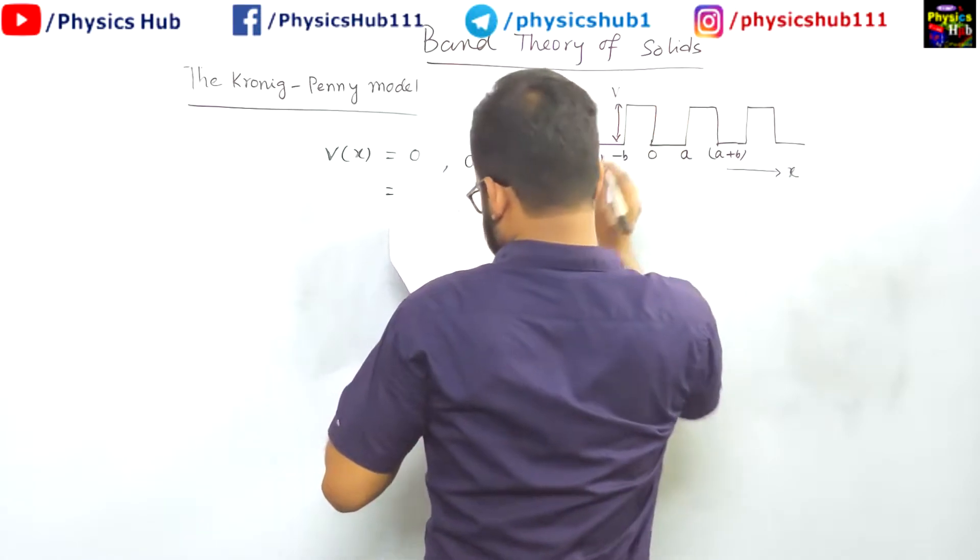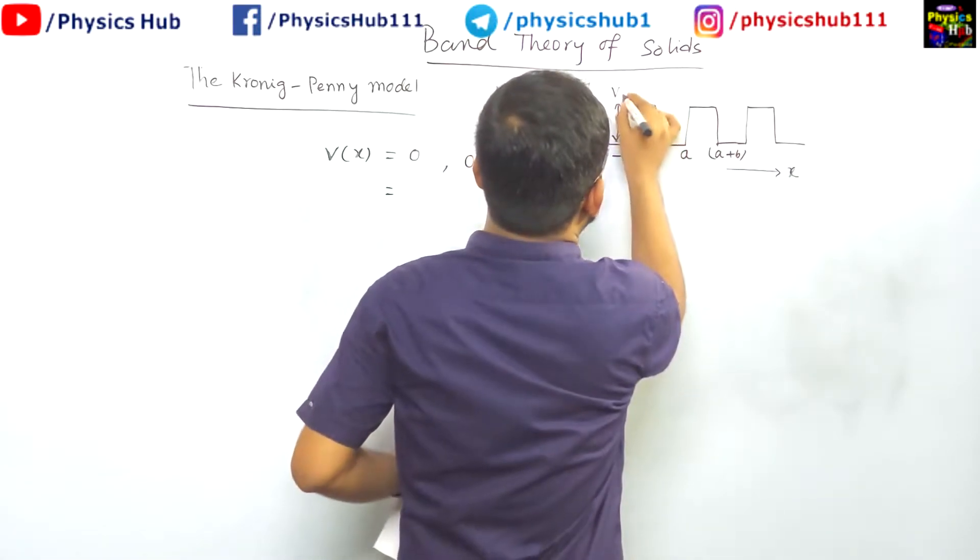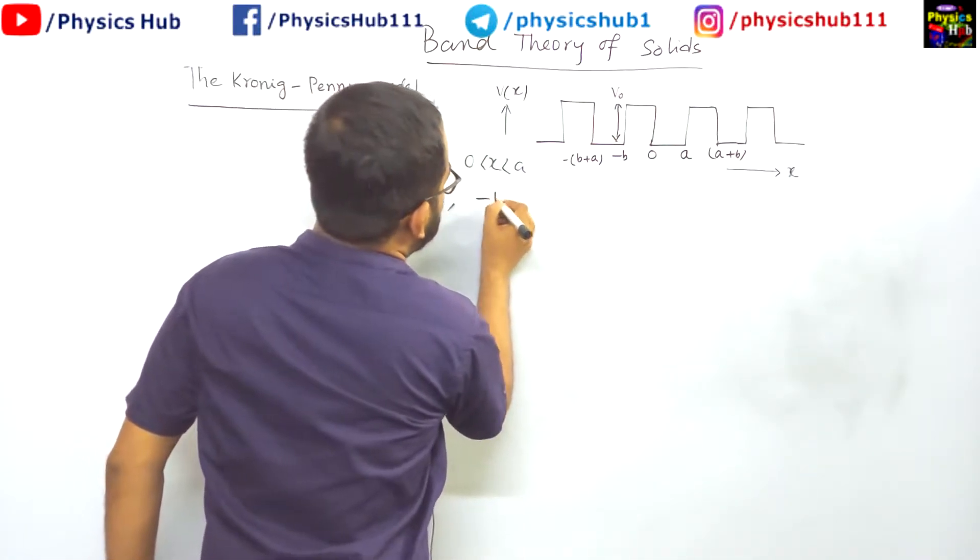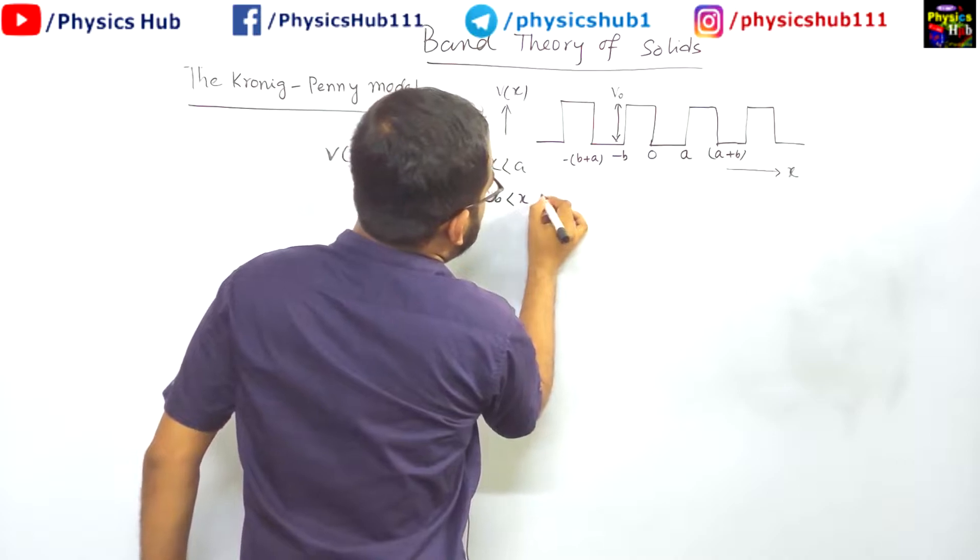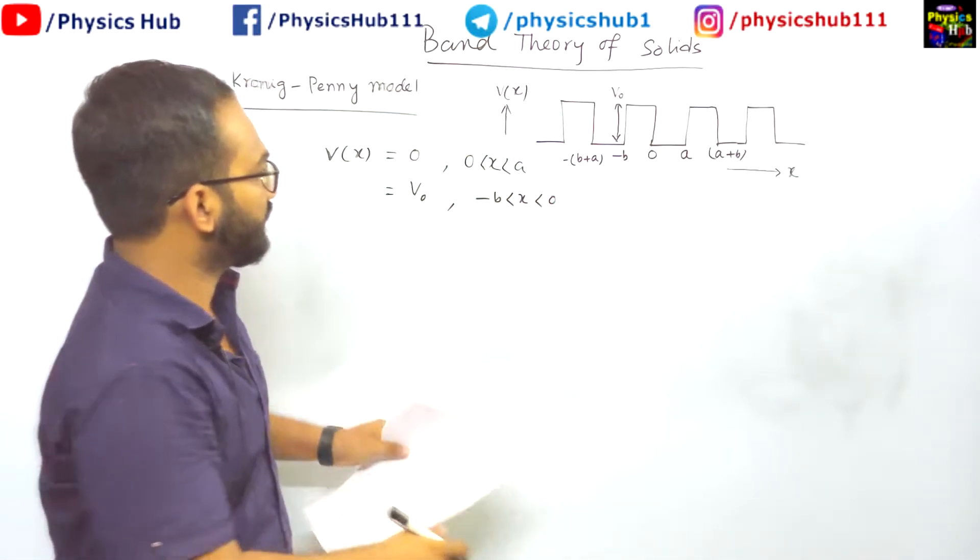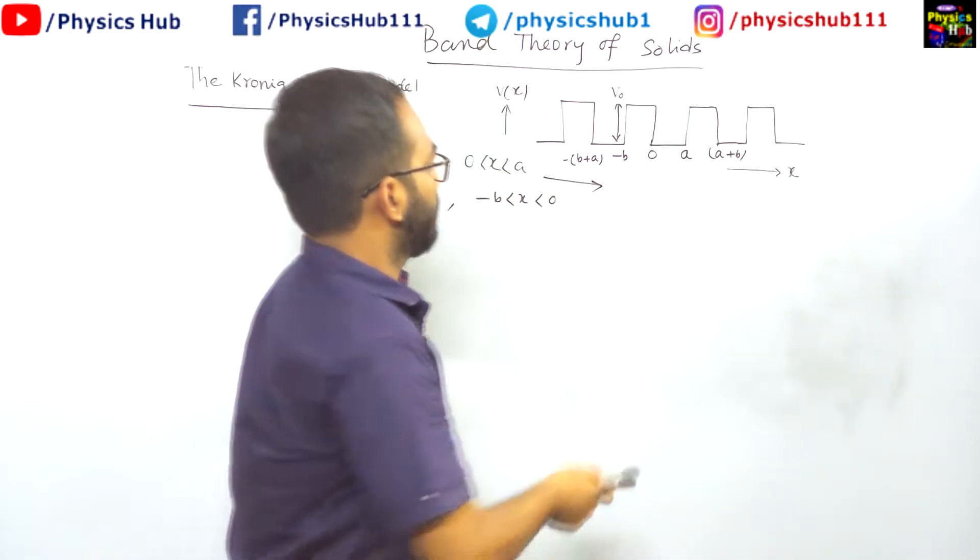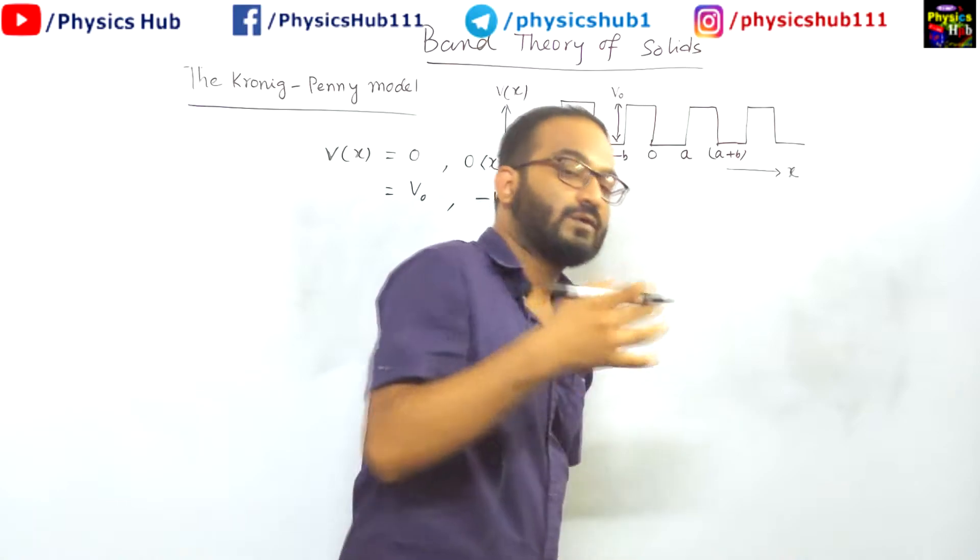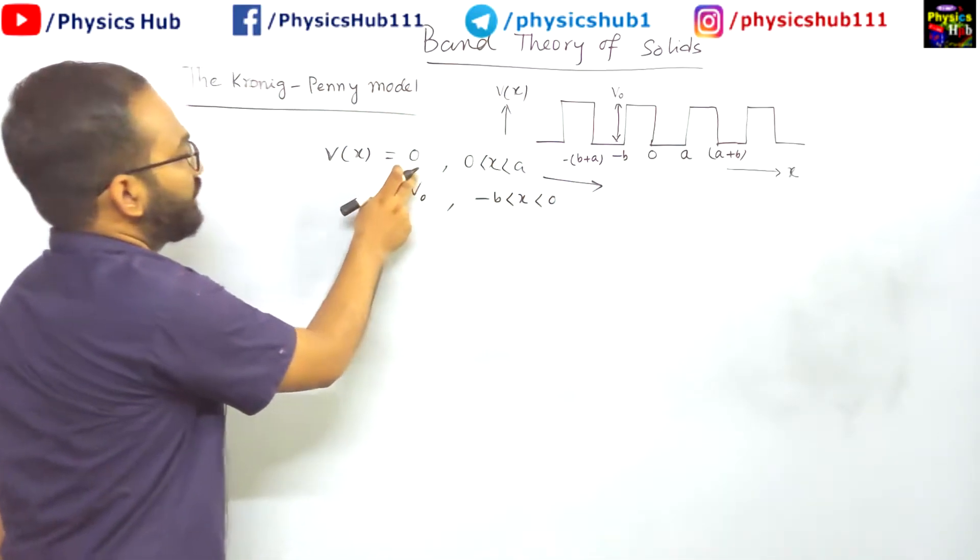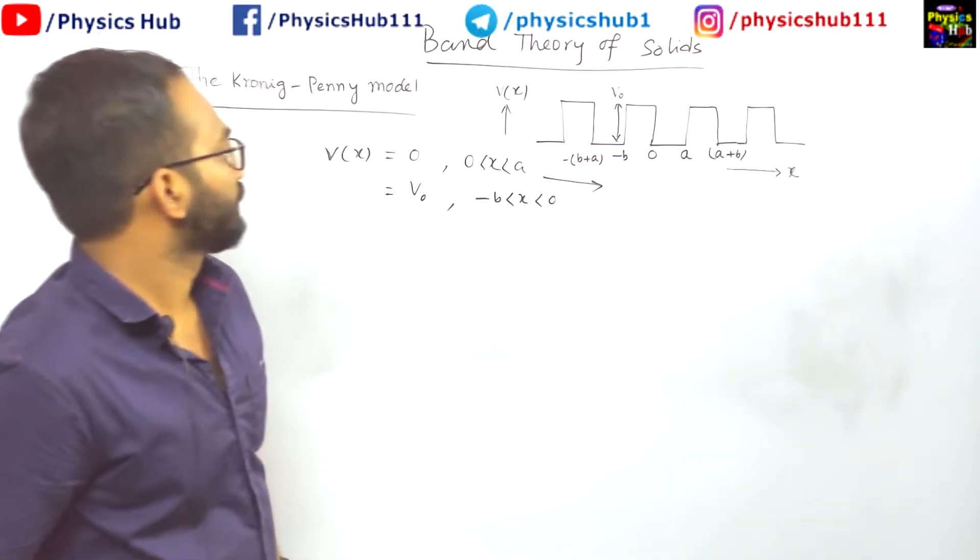Okay, what is taken in my note? It is v0, where minus b less than x less than 0. When the potential is 0, it means the electron is closer to the nucleus. That is how the potential has been taken to be 0. And for this, it is away from the nucleus.